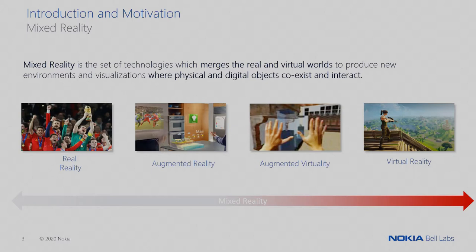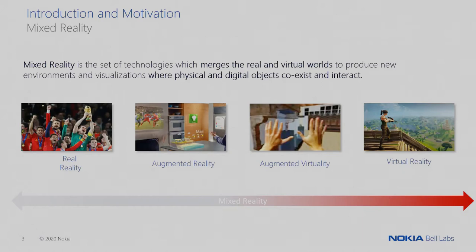Within mixed reality we can find different modalities. First we have normal reality in which we all live. When we start adding some virtual content on top of reality, we talk about augmented reality. On the contrary, if the world that surrounds us is completely virtual and only some real objects are incorporated into the virtual world — such as the hands or other important objects — then we are talking about augmented virtuality. And last is the total virtual environment in which the user is completely immersed in a fully virtual environment.